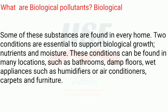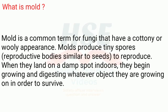Some of these substances are found in every home. Two conditions are essential to support biological growth: nutrients and moisture. These conditions can be found in many locations such as bathrooms, damp floors, wet appliances such as humidifiers or air conditioners, carpets, and furniture.